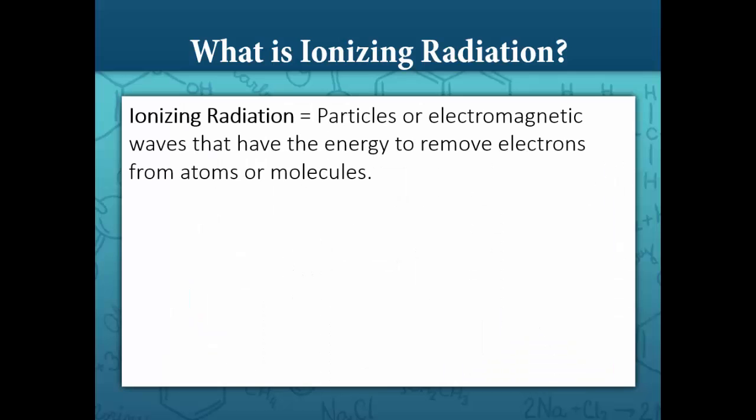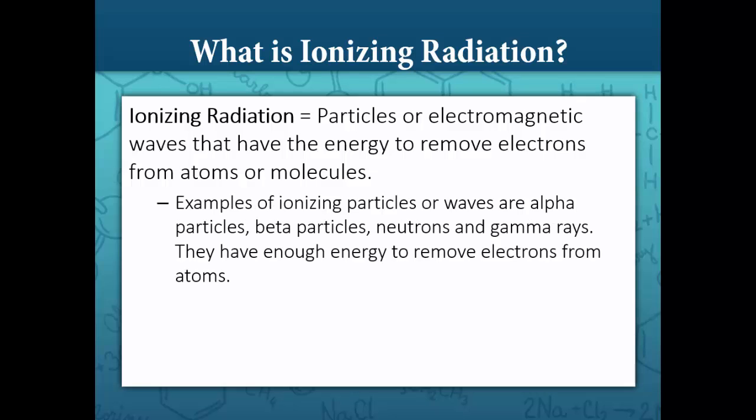Let's first define ionizing radiation. Ionizing radiation is the emission of particles or electromagnetic waves that have the energy to remove electrons from atoms or molecules. Examples of ionizing particles or waves are alpha particles, beta particles, neutrons, and gamma rays. They have enough energy to remove electrons from atoms.